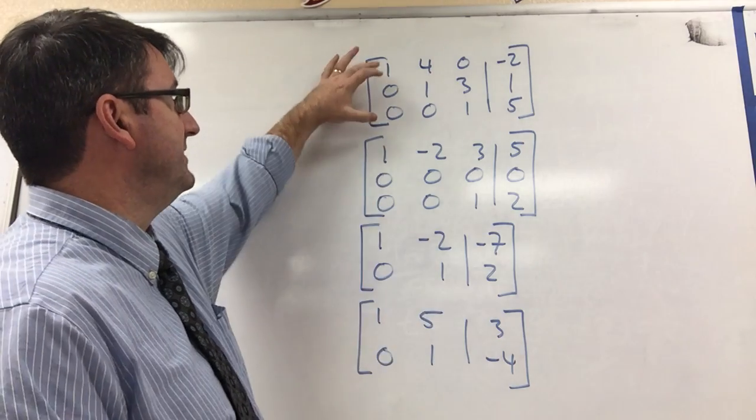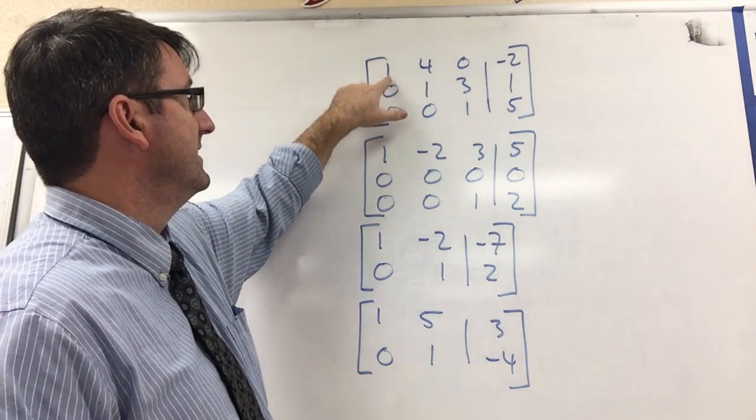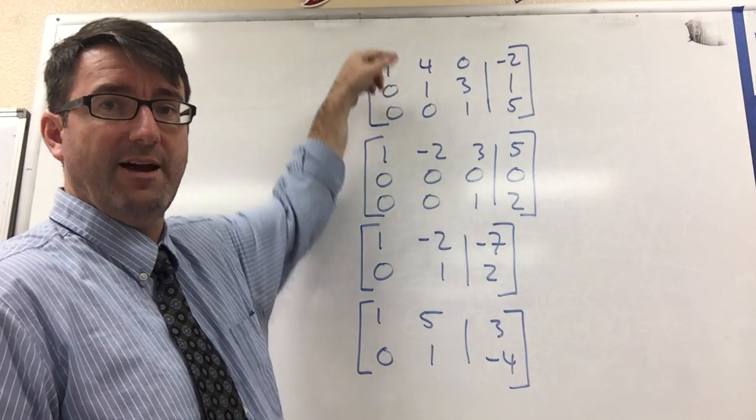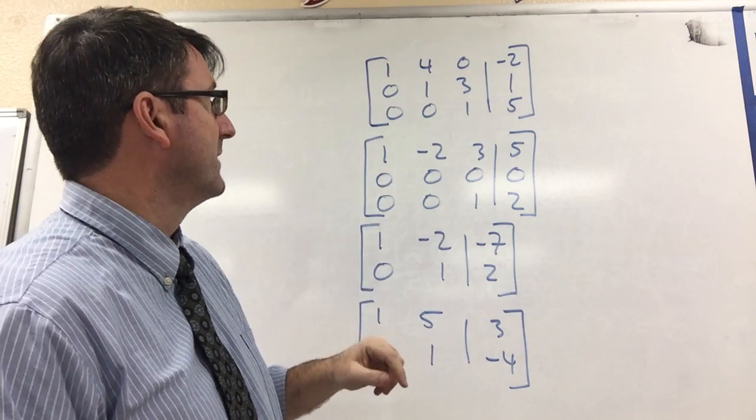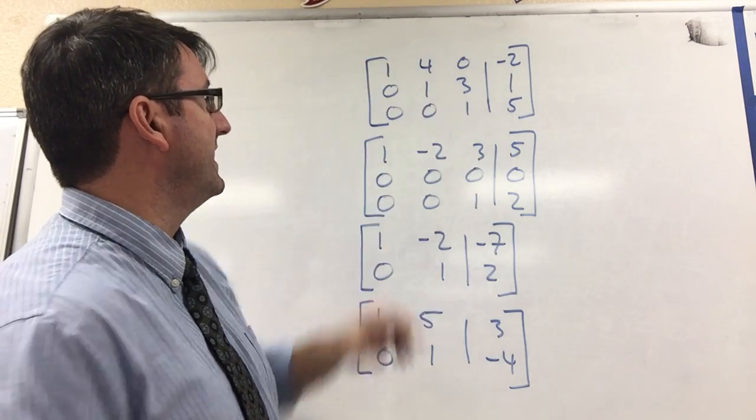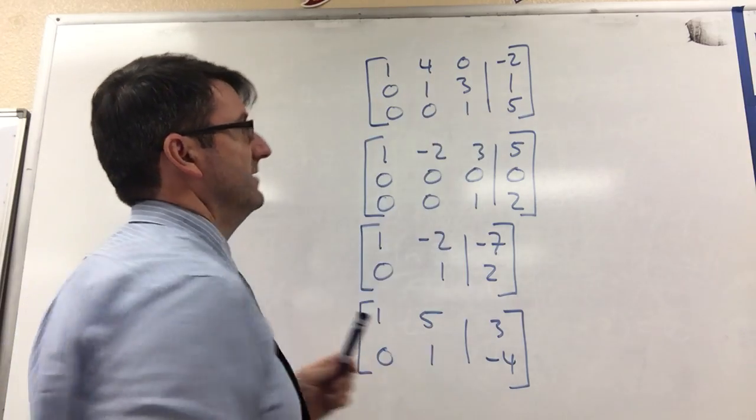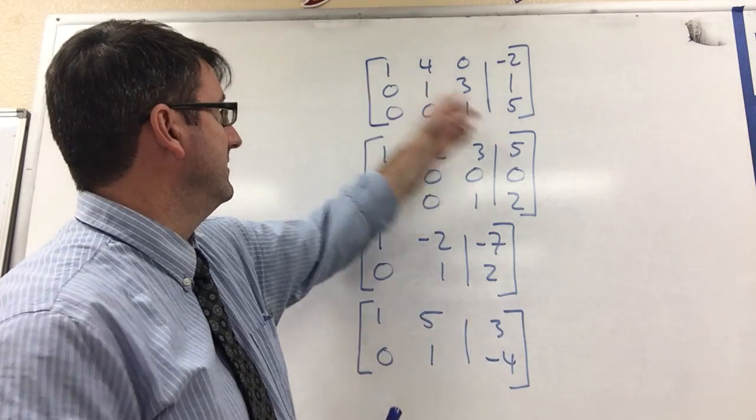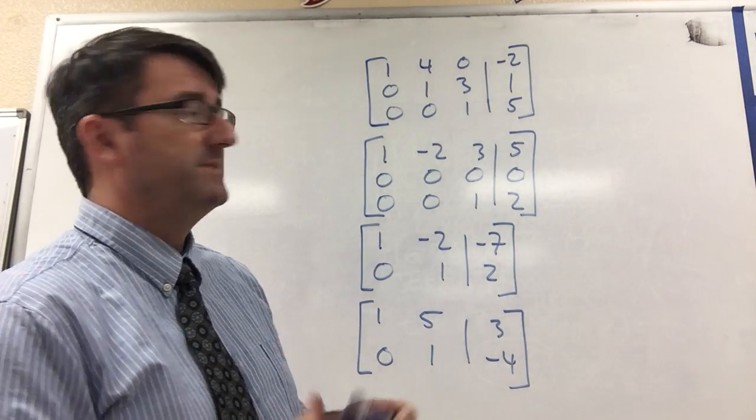And then for any two successive rows, that leading one is farther to the left on the higher row. So that's fine. And it ends up making a triangle with the zeros and the ones are there in a diagonal.